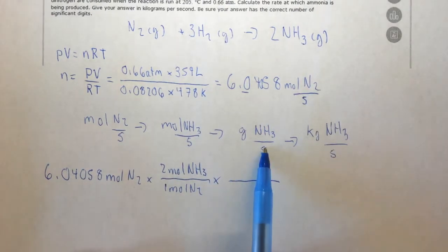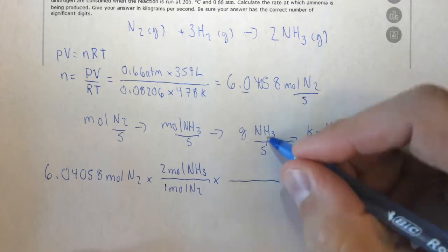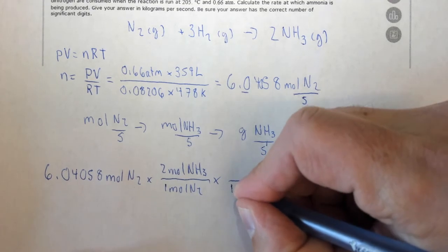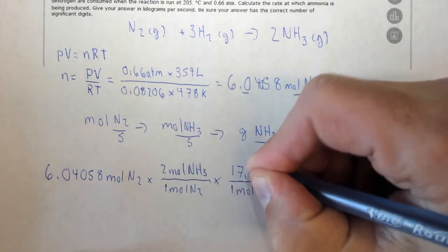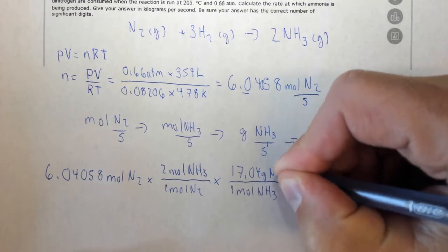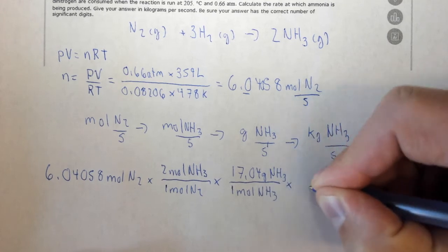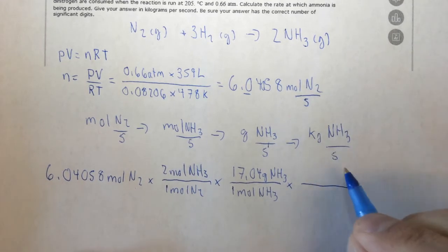Now we want to go to grams of NH3. We need the molar mass of NH3. It's one mole of NH3 on the bottom, 17.04 grams of NH3 on the top from the periodic table, times.